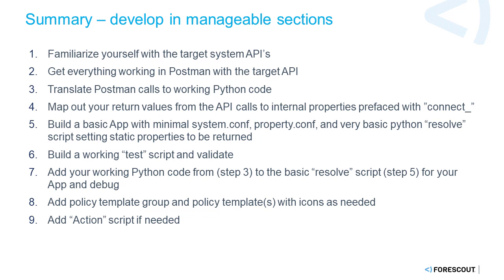Then build a working test script and validate — then you'll know for sure you're talking directly to the server. Add in your working Python code from step three to the basic resolve script from step five, add that to your app, and then debug it all as one big package. Finally, if you want a policy template, you add the policy template group and policy templates as needed.